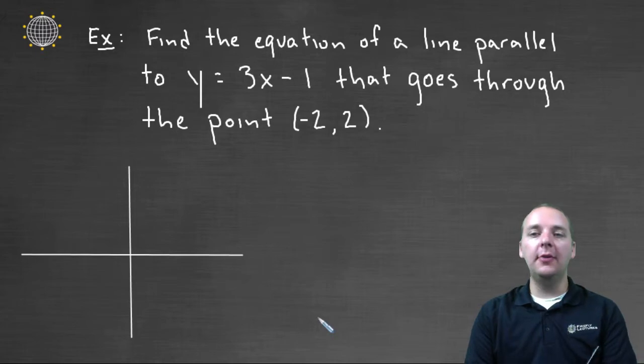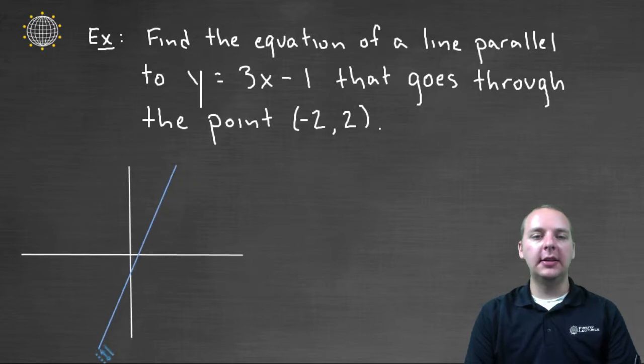So what they'll do is they'll give you the equation of one line, let's say it looks something kind of like this, let's say this is y equals three x minus one, and then they'll also provide you with a point like negative two, two, which is right about here, here's negative two, two.